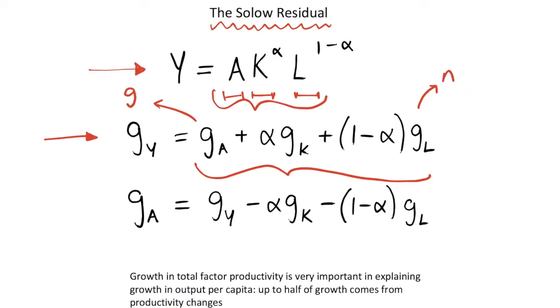What we can do is rearrange to get this g_A term on the left hand side. We do this by subtracting these two terms away from both sides, and we get that g_A is equal to the growth rates of output minus the growth rates of each factor of production.